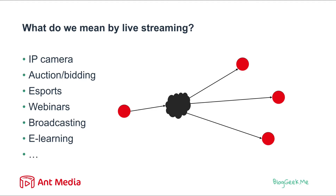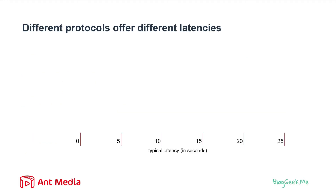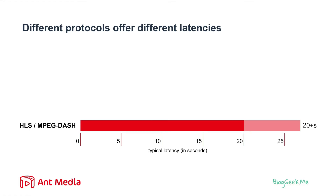For that to be live streaming, we need to make the latency very, very short. These are the typical latencies we will see for different protocols. If we use different protocols for streaming, they are going to have different latencies. Let's take one of the most common alternatives — HLS and MPEG-DASH. These two protocols today offer streaming with latencies of 20 seconds or more.